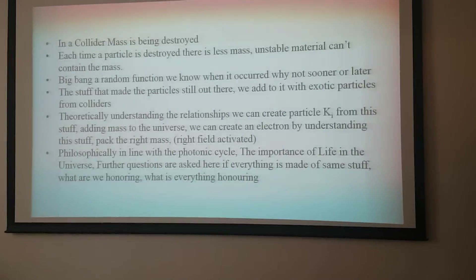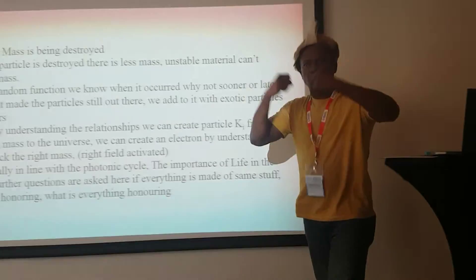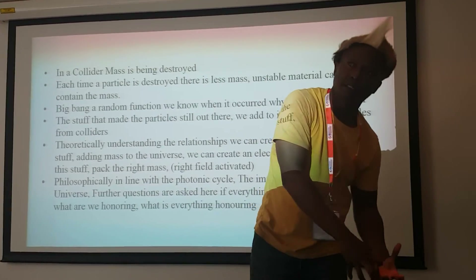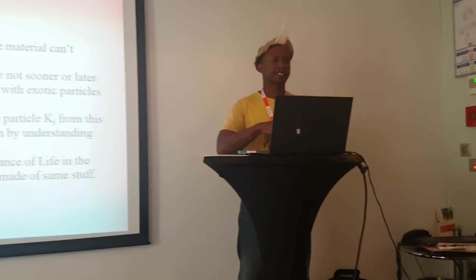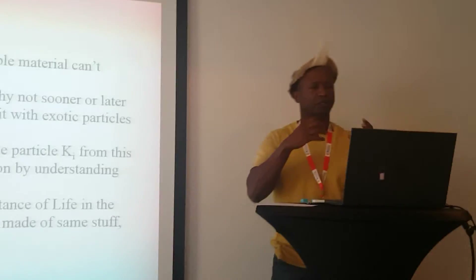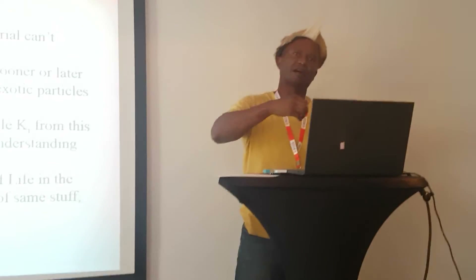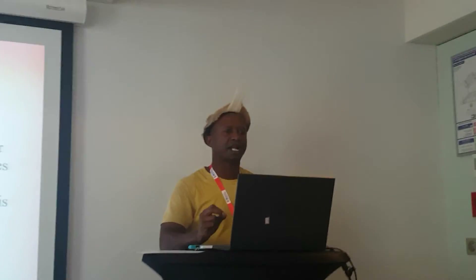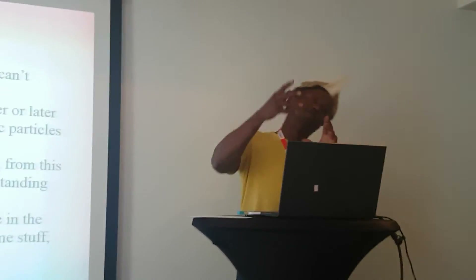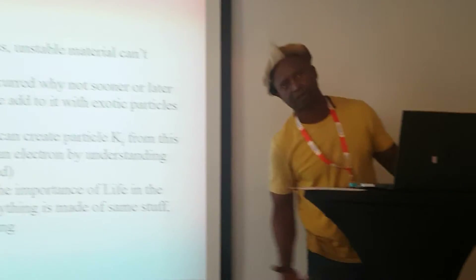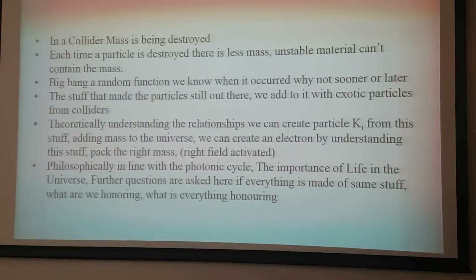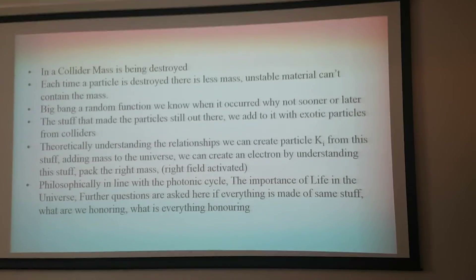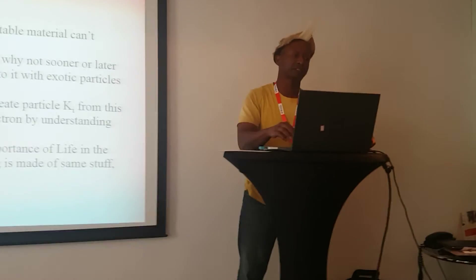The stuff that made the particles is still out there — because when we smash particles in a collider, they return to what they were. So the stuff that made particles is still out there, and it has no mass. Theoretically, if we understood the reverse of smashing a neutrino, we could actually add mass to the universe — we can create an electron. By understanding this stuff, we can pack the right mass. This is philosophically in line with the photonic cycle and the importance of life in the universe.